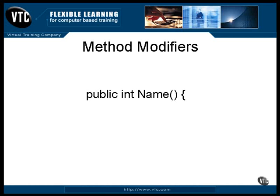The access can be opened up to every class no matter what package it's in by specifying it as public. This modifier takes off all access limitations. On the other hand, you can limit access to being only from inside the class by declaring the access as private. Just like the data items, this method can be accessed only from inside the class — you can't even access it from a subclass.